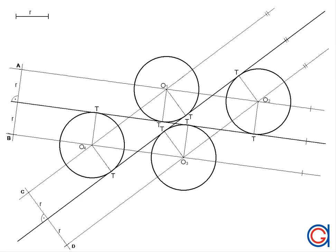Here you have the four circles of a given radius r which are tangent to the two given intersecting lines. I hope this video has helped you. Please press like and subscribe to our YouTube channel. Until the next time, thank you.